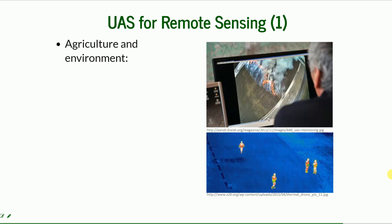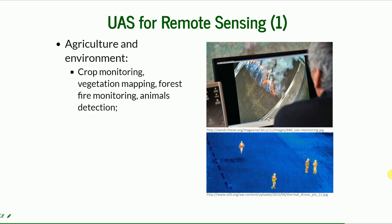What about UAS for remote sensing? In agriculture and environment, it can be used for crop monitoring, vegetation mapping, forest fire monitoring, and even animal detection.